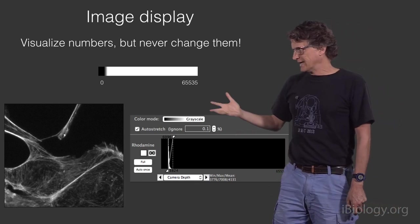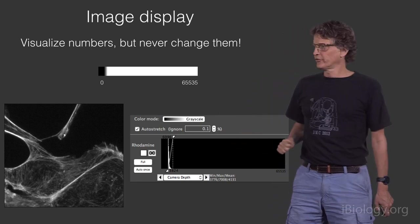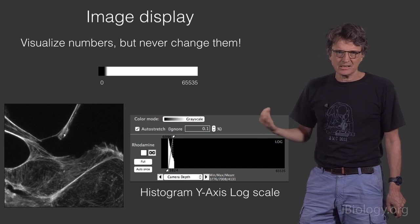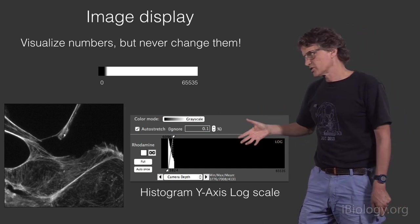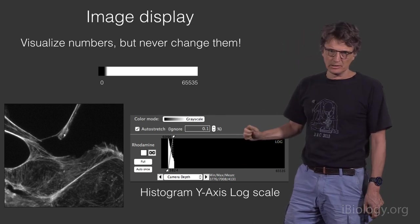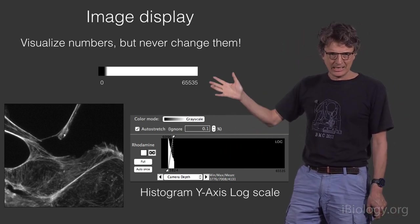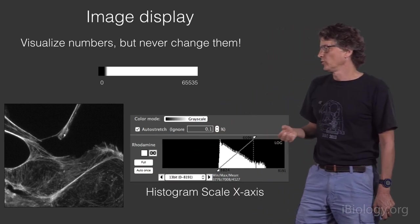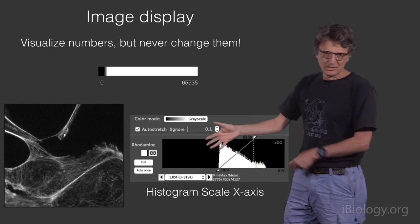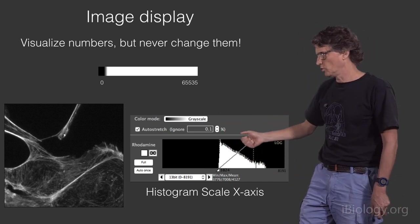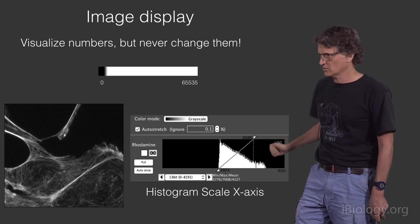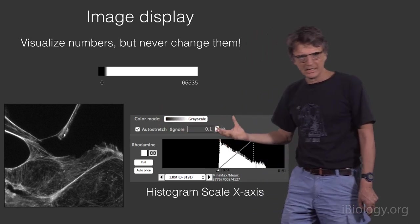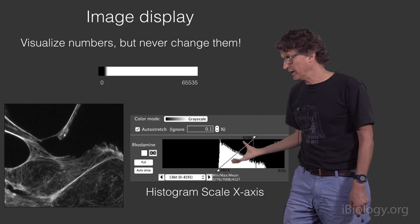There are all kinds of tricks you can play with these tools. Often it is useful to look at rare values in your histogram, so you often want to use a log scale, a logarithmic scale for your y-axis, so that the rare bright pixels actually stand out and you can see them. You may want to scale the x-axis so that you actually get a better view on what pixel values you have there. Again, we're not changing any of the original values here, we're only changing how we look at them.